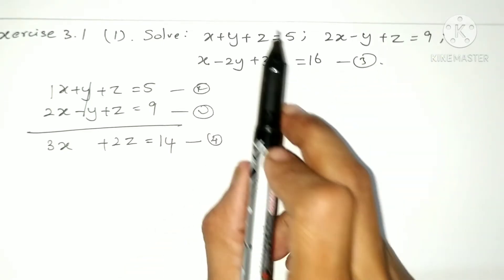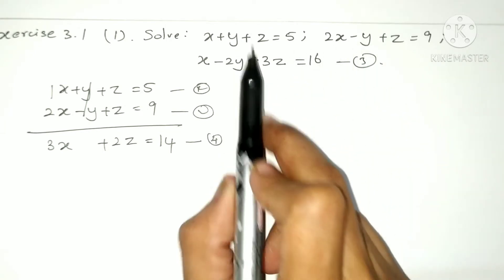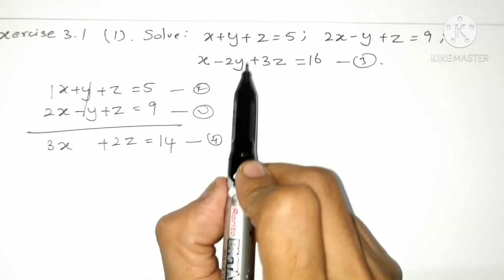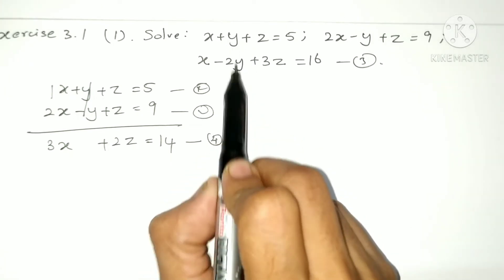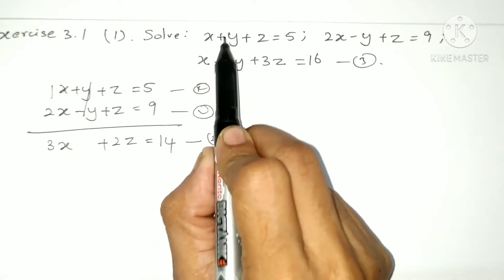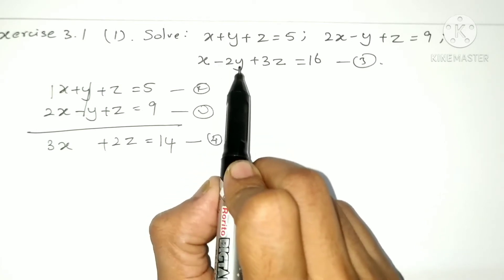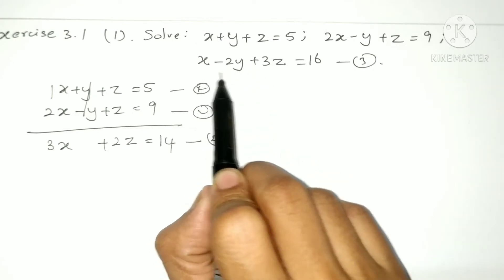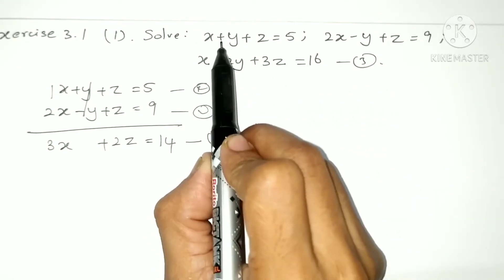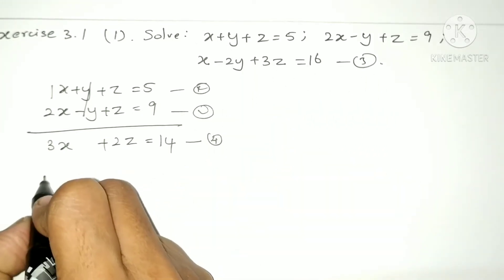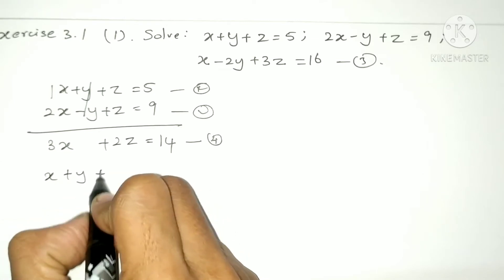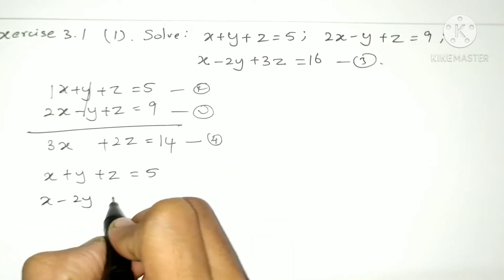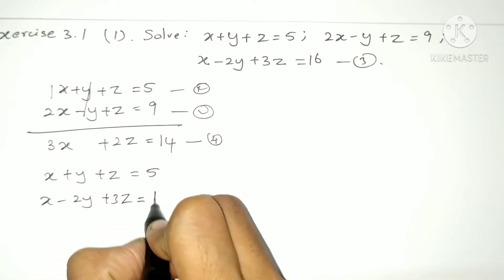Again, we can add equations 1 and 3, or 2 and 3 — as you wish. If we add equations 1 and 3, we need to change the sign. x plus y plus z is equal to 5, and x minus 2y plus 3z is equal to 16.